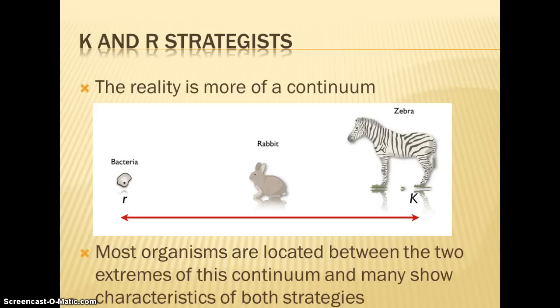Most organisms aren't going to be at one extreme end of the spectrum — R or K — most fall somewhere along the continuum. Humans show characteristics of both strategies: we can adapt well to many ecosystems, yet we have few young and tend to take care of them. But the human population is still growing exponentially, so we're on that J-curve.